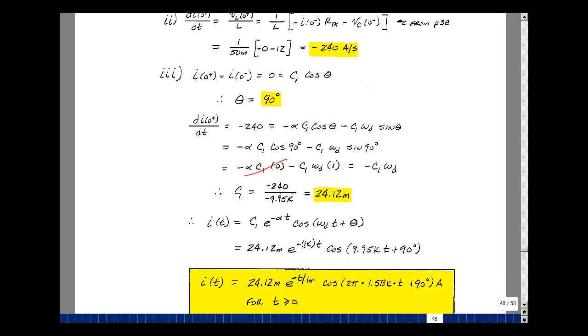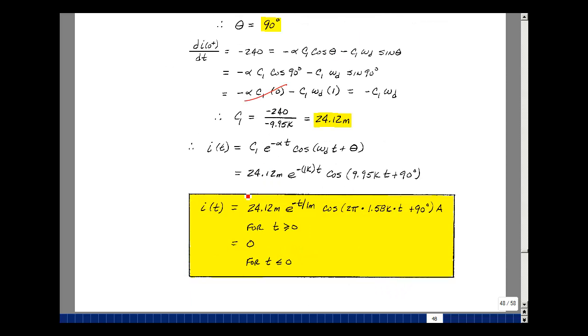So I'm going to put my solution together. I've got c1 times e^(-1000t) cosine of 9.95k*t plus 90 degrees. Let's rewrite this solution in a form that may be a little bit easier for us to interpret. Let's write 1k as 1 over 1 millisecond, and let's write the 9.95k radians per second with a factor of 2π pulled out, and that gives us 1.58kHz. My solution now is 24.12 milli*e^(-t/1ms)*cosine(2π*1.58k*t + 90°).